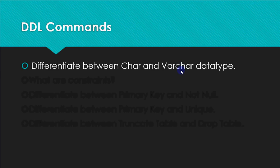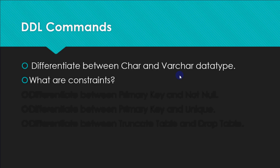Constraints are the restrictions imposed on the columns of a table. The constraints we have are: UNIQUE, NOT NULL, PRIMARY KEY, DEFAULT, CHECK, and FOREIGN KEY. You need to define constraints and name a few. When the examiner asks you to explain any specific constraint — like PRIMARY KEY or NOT NULL in detail — then explain that.